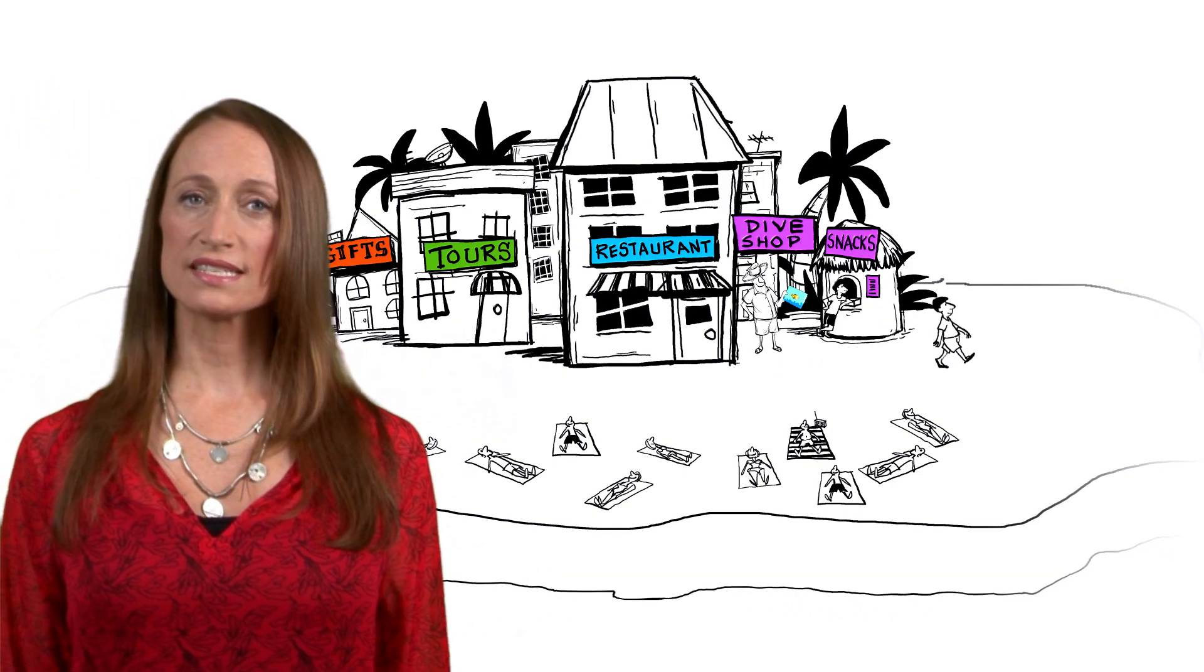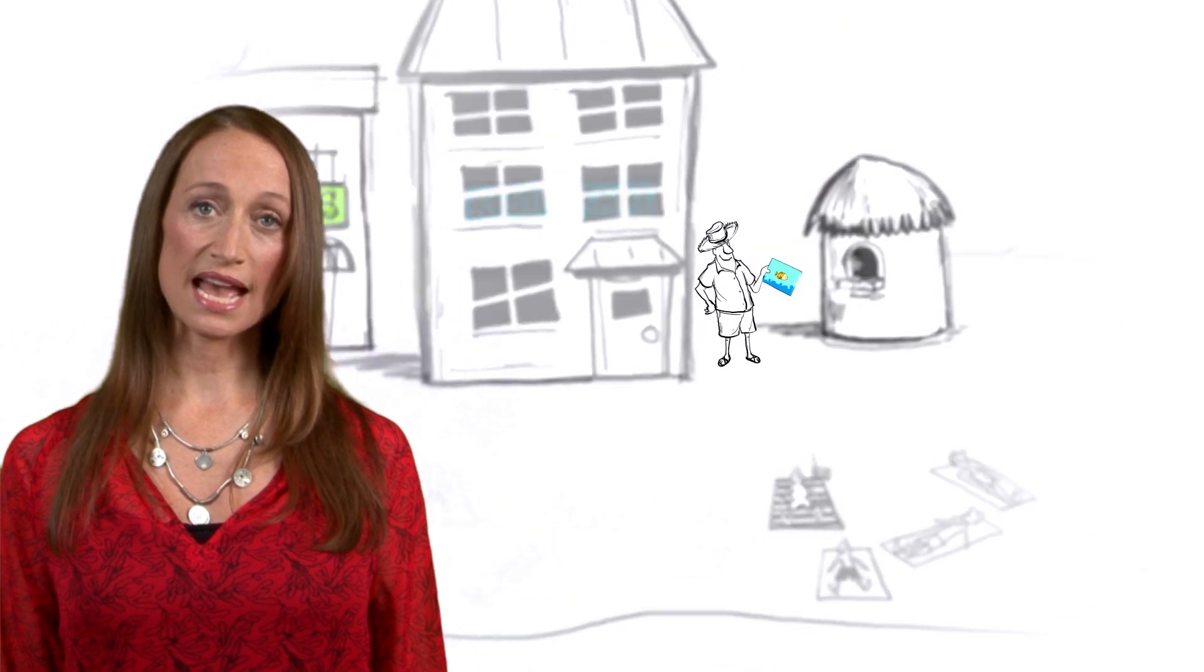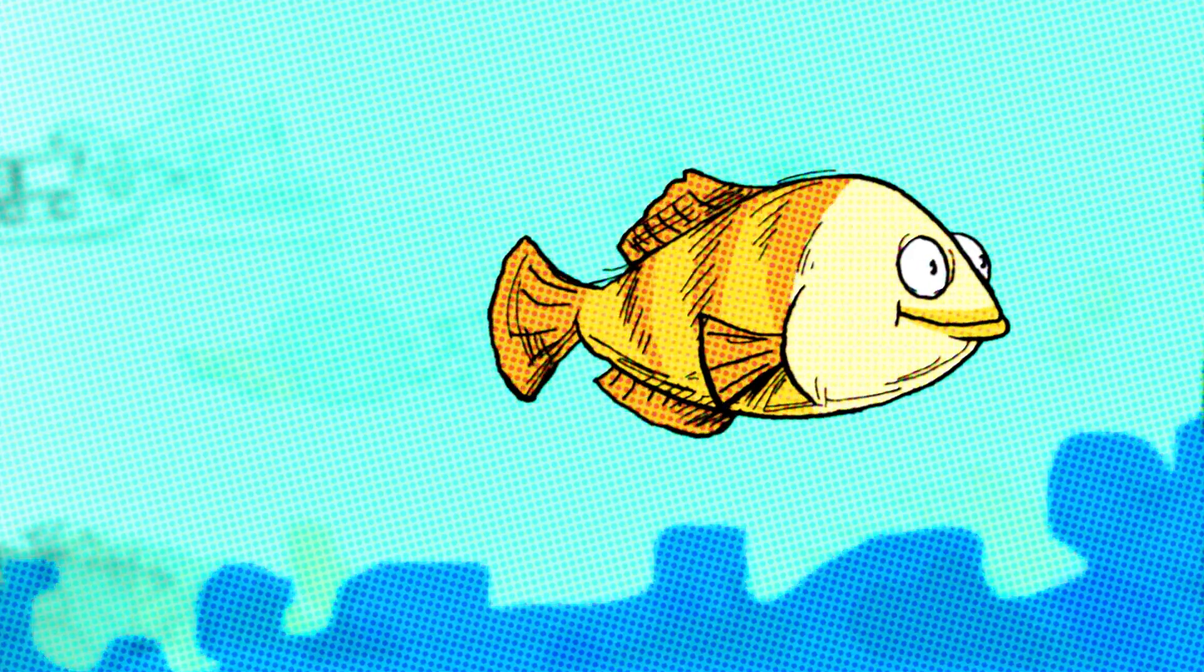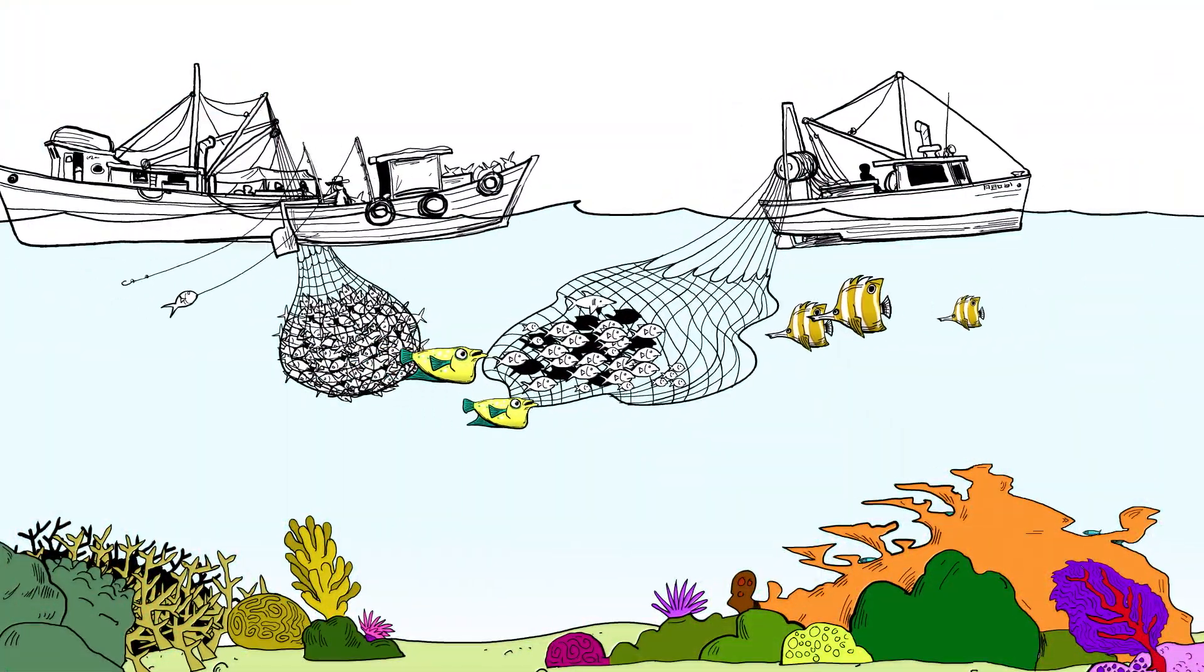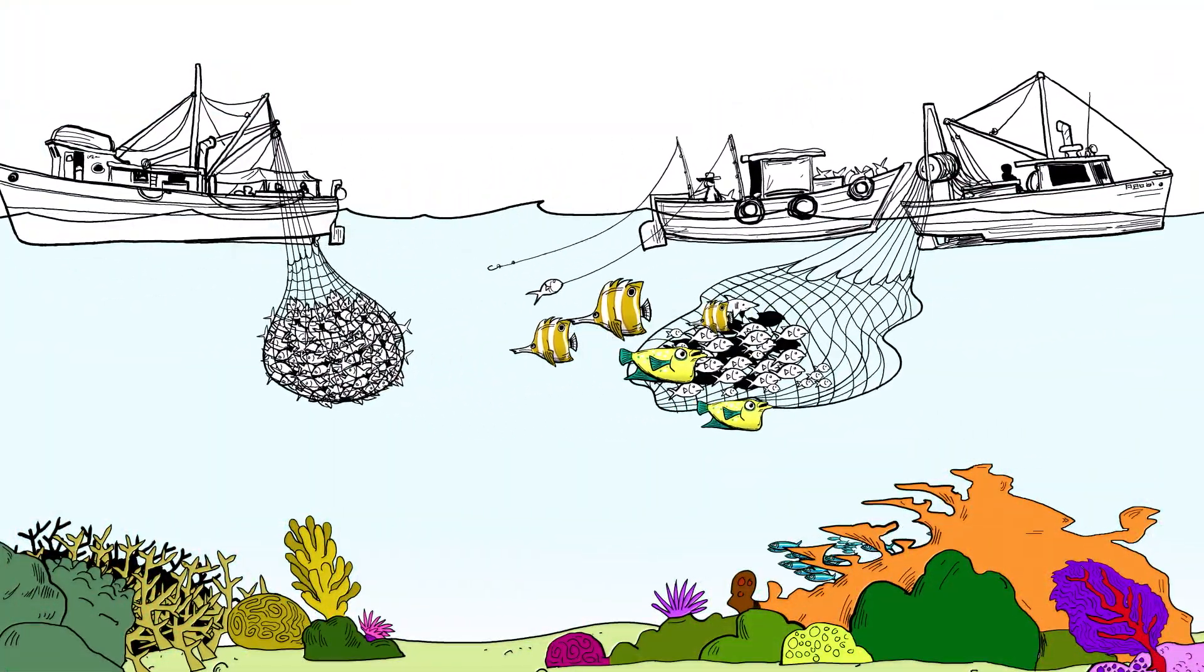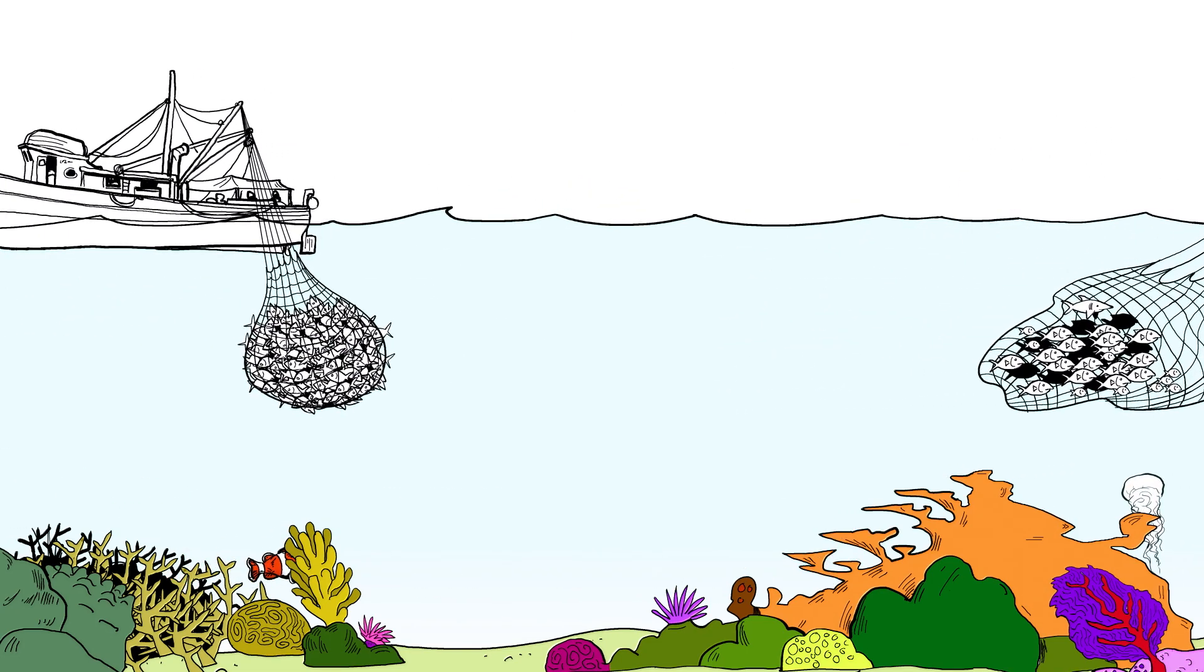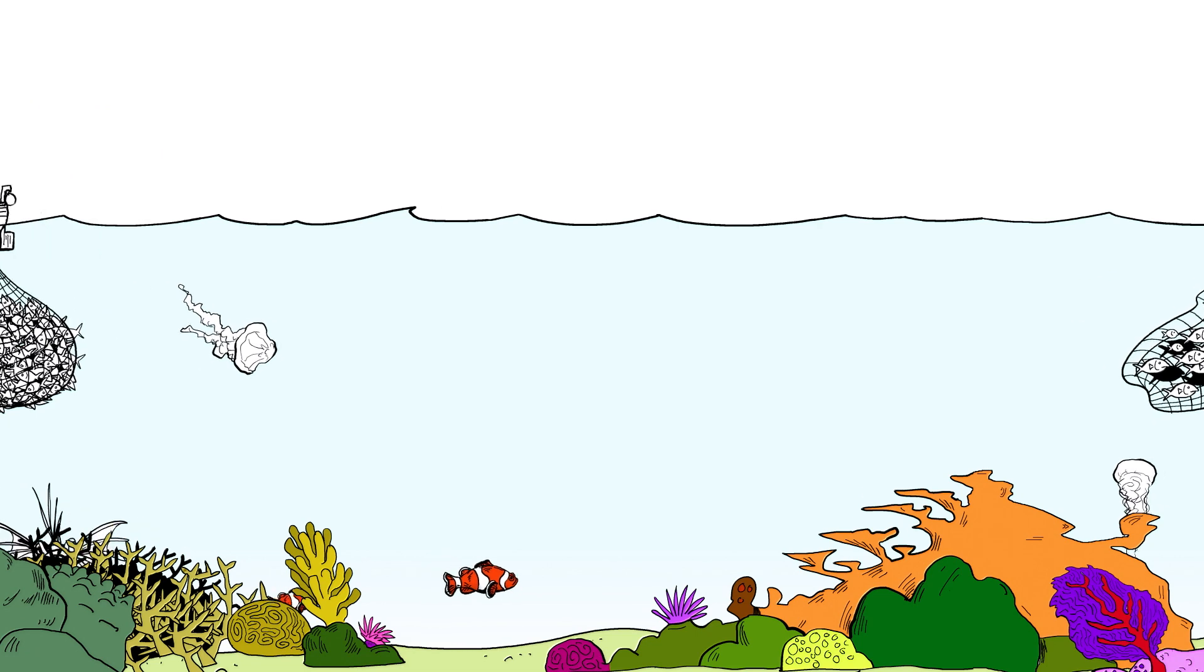But the way we're harvesting seafood is destroying the reefs and all the potential the reefs have to provide for us in the future. We're taking fish from the ocean at a rate that's completely unsustainable, sometimes using destructive methods like poison and blast fishing. This disrupts an ecosystem that's been in balance for a very long time.